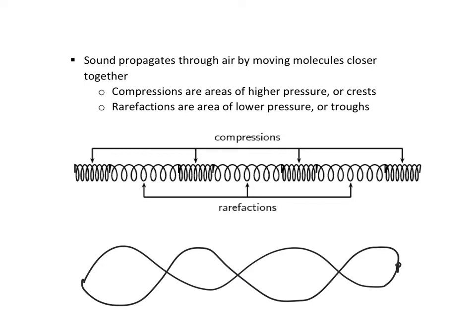Sound wave is a longitudinal wave so it's going to have these compressions and rarefactions. So compressions are where you have the higher pressure, those would be considered your crests. The rarefactions are where sound waves are spread out, so that would be the trough.